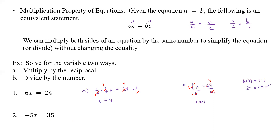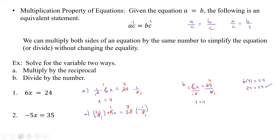For the next one, we have negative 5x equals 35. For part A, we're going to multiply by the reciprocal. We have negative 5x here, so we're going to multiply by negative 1 fifth, because we want a positive x — we need to get rid of that negative. Negative times negative is positive. That cancels that, making it positive. That's 1, that's 1, and on the right side that's 1, that's 7. So x equals 7 times negative 1, which is negative 7.